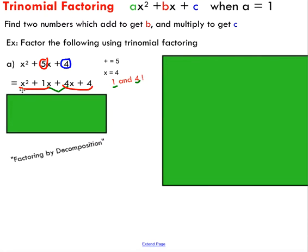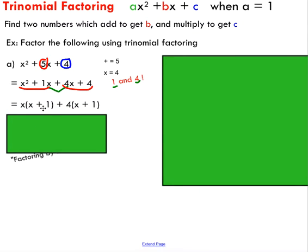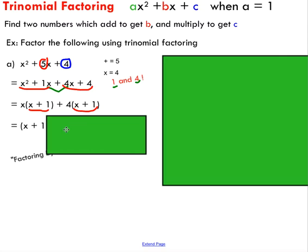If you've watched the common factoring video, you know I can take one x term and factor it out of the first group, ending up with x times (x plus one). For the second group I can common factor out a four, giving four times (x plus one). If you've done this correctly, something interesting happens — you end up with a common factor inside both sets of brackets. I'm going to common factor out (x plus one), and what's left is (x plus four).